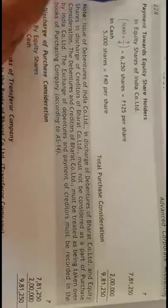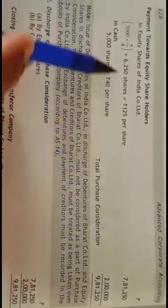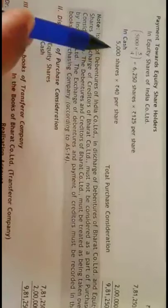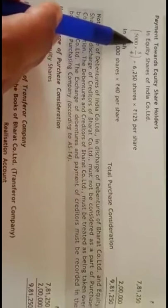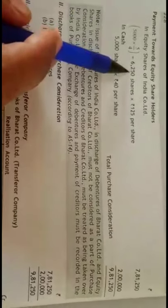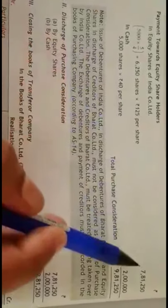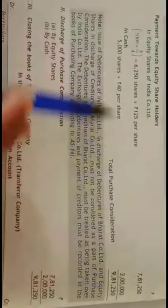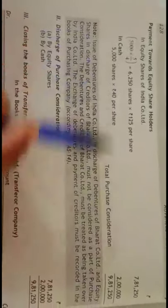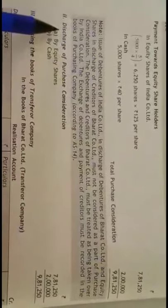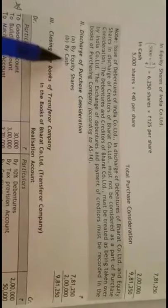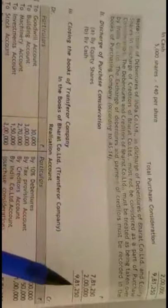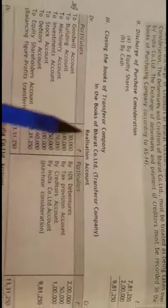Now let us calculate the purchase consideration. PC is paid both in the form of equity shares and cash. For every four shares, five shares are issued, so for 5,000 shares, 6,250 shares are issued at rupees 125 per share, giving seven lakh eighty-one thousand two fifty. In cash, 5,000 into 40 equals two lakh. Total PC discharged is nine lakh eighty-one thousand two fifty.